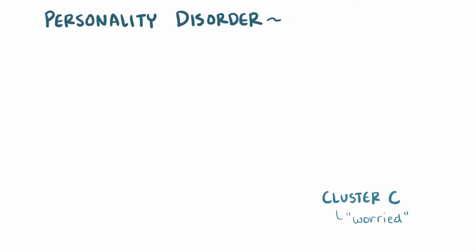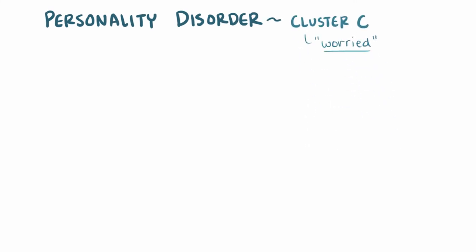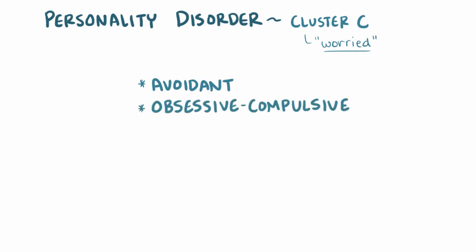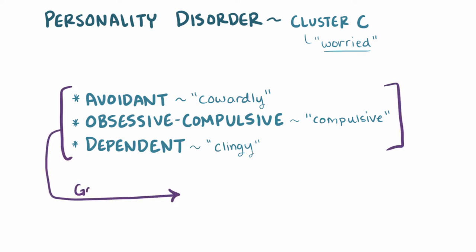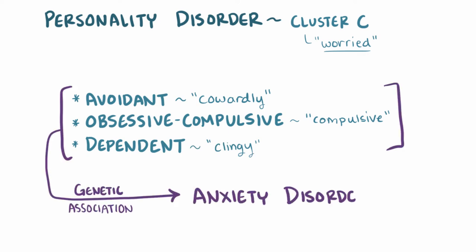Cluster C personality disorders are the worried personality disorders, and they include avoidant personality disorder, obsessive-compulsive personality disorder, and dependent personality disorder. These three disorders can also be described as cowardly, compulsive, and clingy to help you remember them, and they all have a genetic association with anxiety disorders.